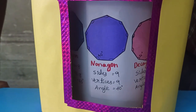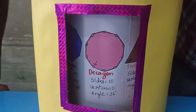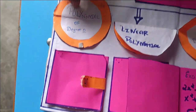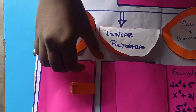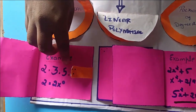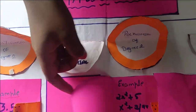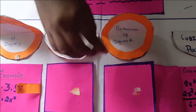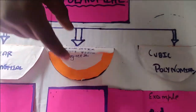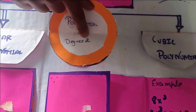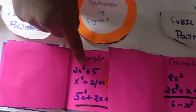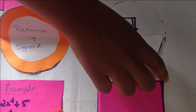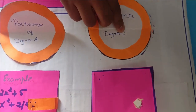A nonagon has nine sides and nine vertices. A decagon has ten sides and ten vertices. A constant polynomial is a polynomial of degree zero. Examples: 2, 3, 5. A quadratic polynomial has degree two, for example 2x squared plus 5. A cubic polynomial has degree three.